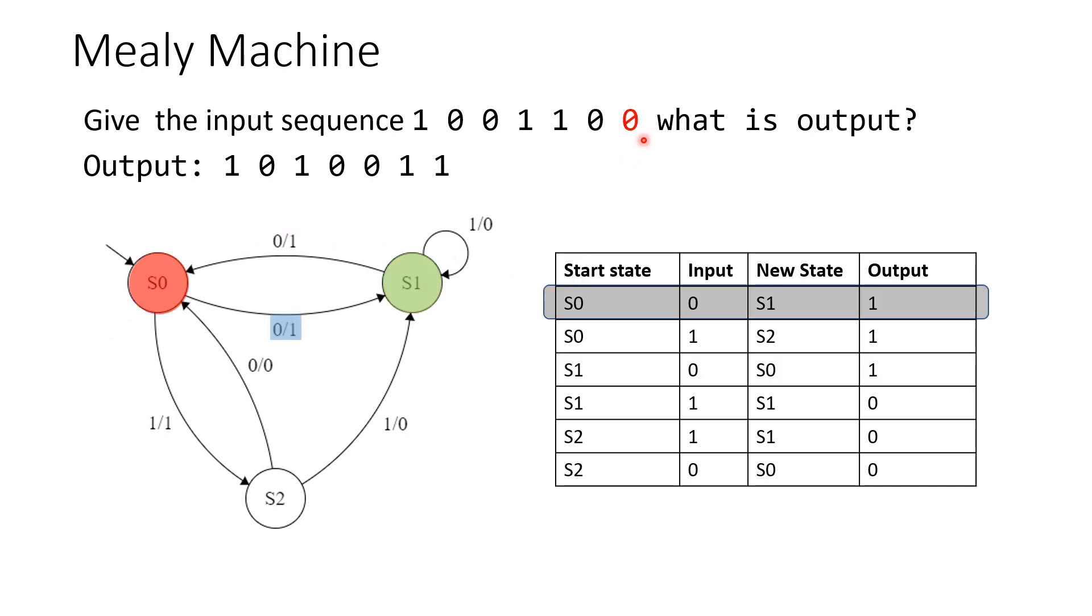And our final input is 0, so from state 0 that means we go state 0 to state 1 and our output is 1. So we finish on state 1 S1.